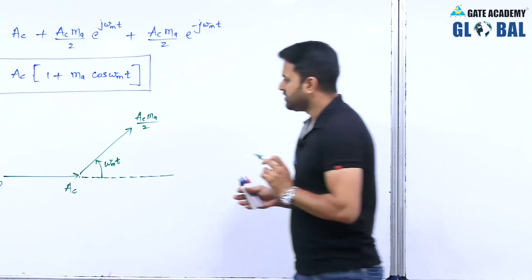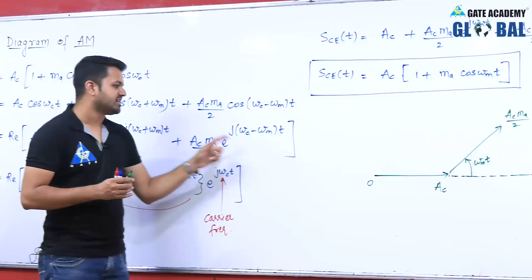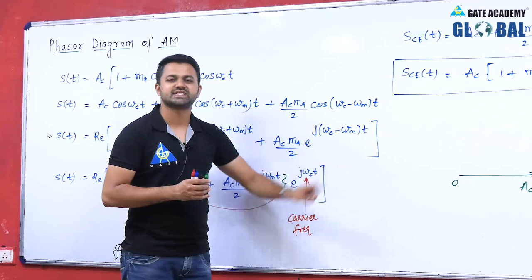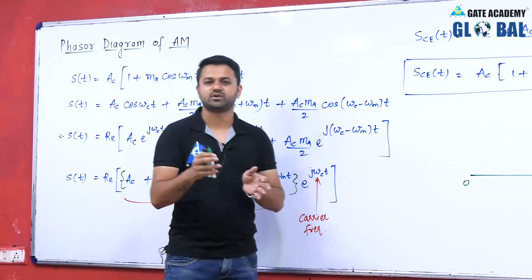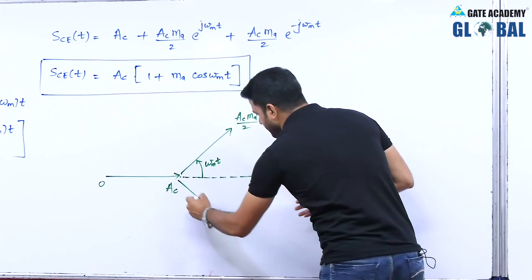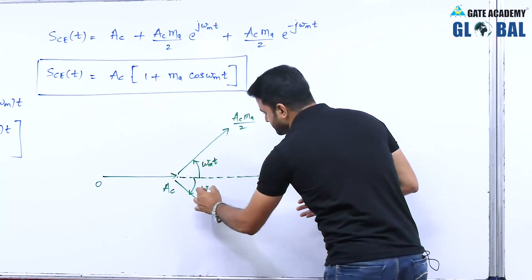Now we add the lower sideband phasor. The term e^(-jωmt) means a negative angle, so we move in the clockwise direction. The magnitude is also Ac·Ma/2. Since one rotation is +ωmt and the other is -ωmt, the two sideband phasors are symmetric about the reference axis.